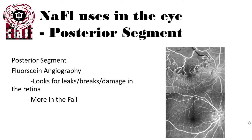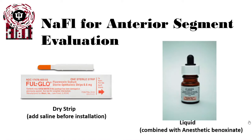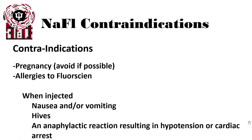Sodium fluorescein has many uses in the eye. In the posterior segment, it's used for fluorescein angiography to look for leaks, breaks, and damage in the retina. For the anterior segment, it's used for a wider variety of evaluations. It can be instilled as a dry strip, which needs saline added before installation, or in liquid form combined with the anesthetic benoxinate.